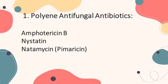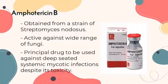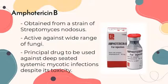The first example is the polyene antifungal antibiotics, such as Amphotericin B, Nystatin, and Natamycin or Pimaricin. Amphotericin B is obtained from a strain of Streptomyces nodosus and is active against a wide range of fungi. It is the principal drug used against deep-seated systemic mycotic infections, despite its toxicity.